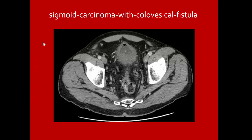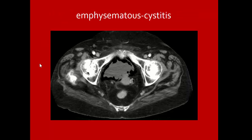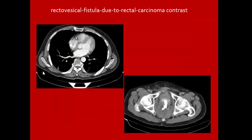Examples of gas in the urinary bladder include colovesical fistula from sigmoid carcinoma, emphysematous cystitis, and rectovesical fistula due to rectal carcinoma.